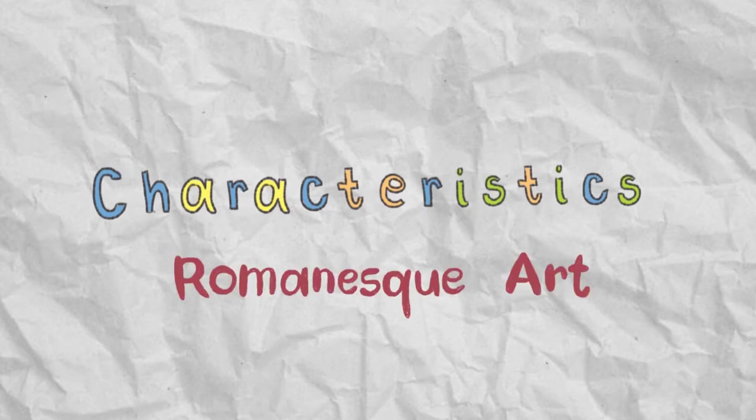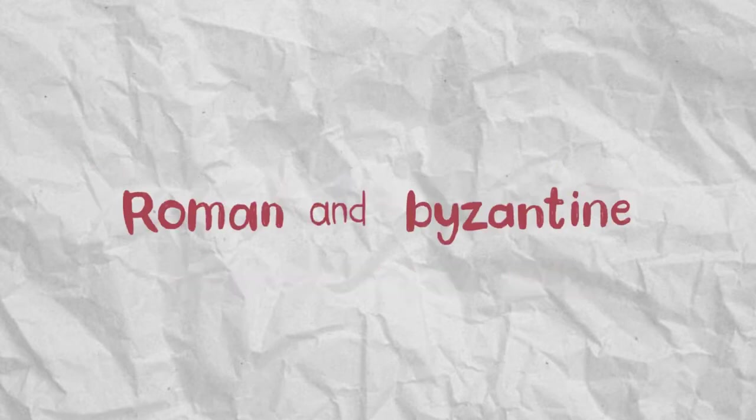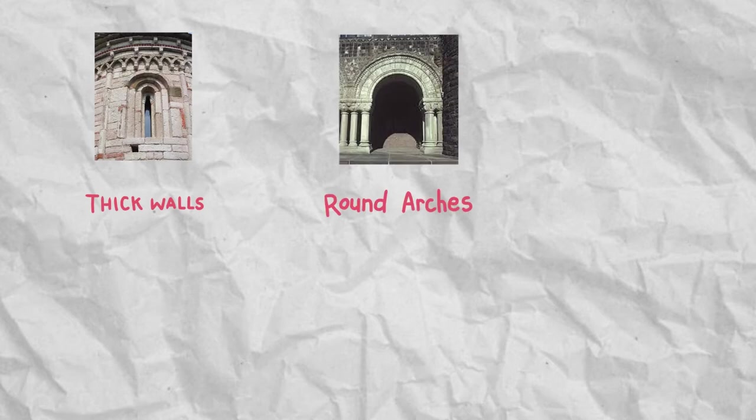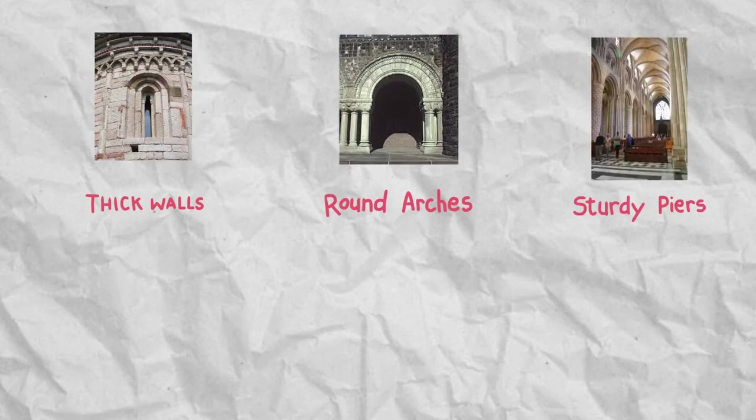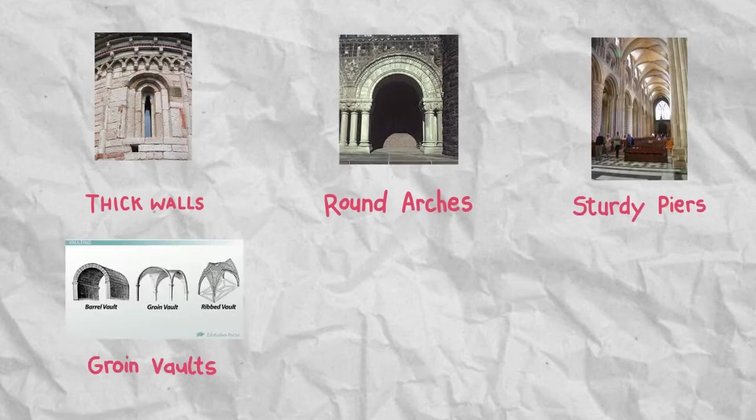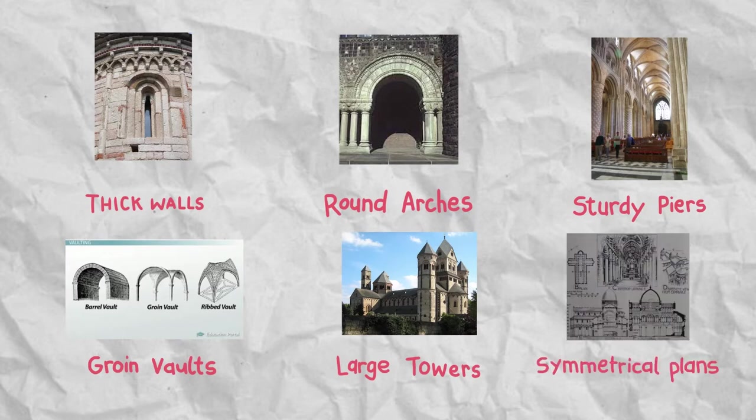The characteristics of Romanesque art can be seen through the combined features of Roman and Byzantine buildings and other traditions. Romanesque architecture exhibits its massive quality, thick walls, round arches, sturdy piers, groin vaults, large towers, and symmetrical plans.